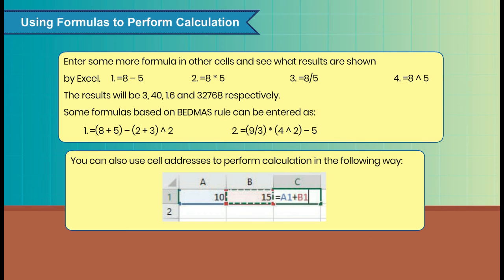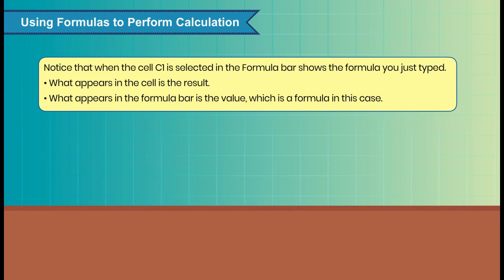You can also use cell addresses to perform calculation in the following way. Notice that when the cell C1 is selected in the formula bar, it shows the formula you just typed. What appears in the cell is the result. What appears in the formula bar is the value, which is a formula in this case.